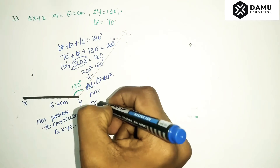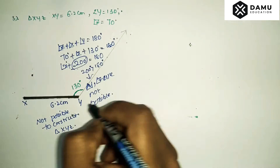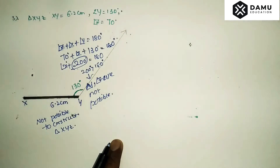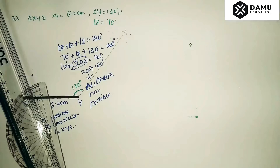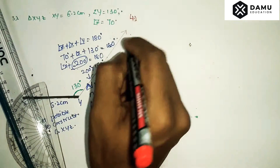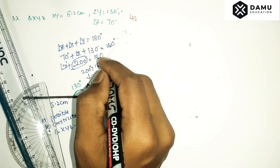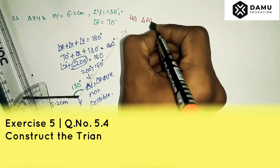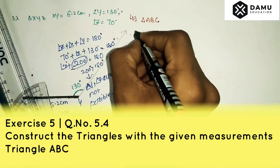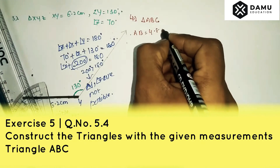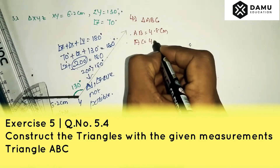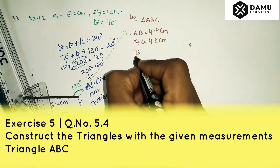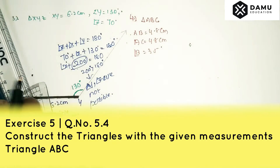Those angles are not possible for a triangle. Our next question is: construct triangle ABC where AB equals 4.8 centimeters, AC equals 4.8 centimeters, and angle B equals 35 degrees.